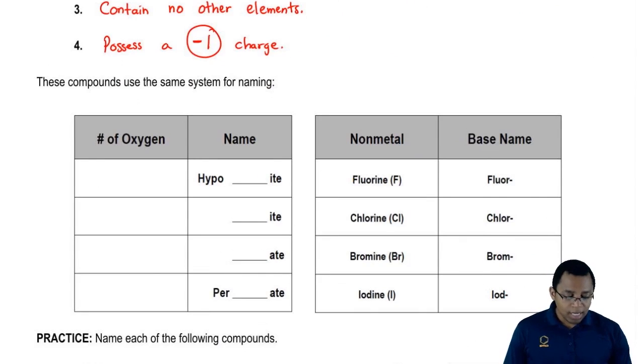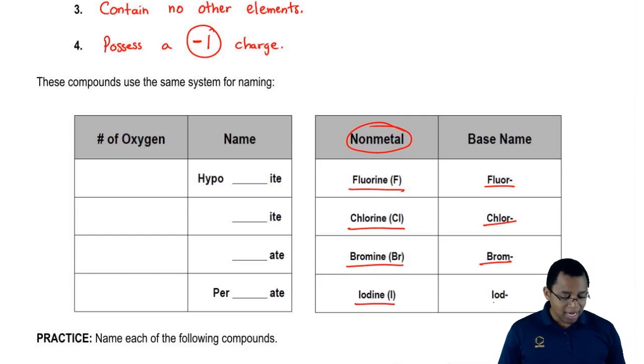What we're going to say first is for each nonmetal, each nonmetal has a base name. Fluorine is fluor, chlorine is chlor, bromine is brom and iodine is iod. Those are the base names.